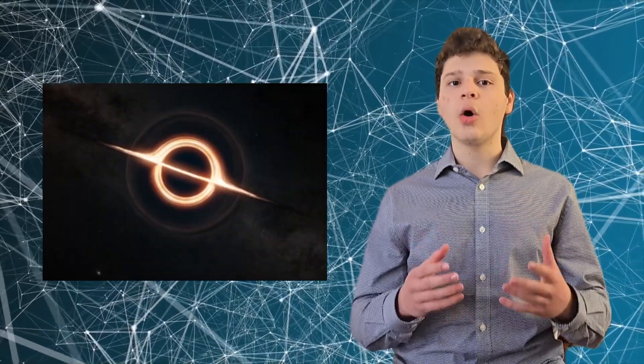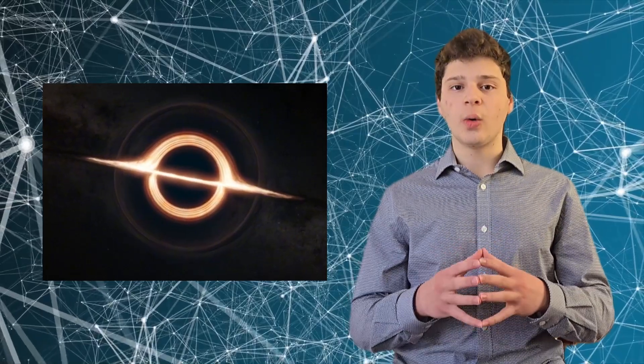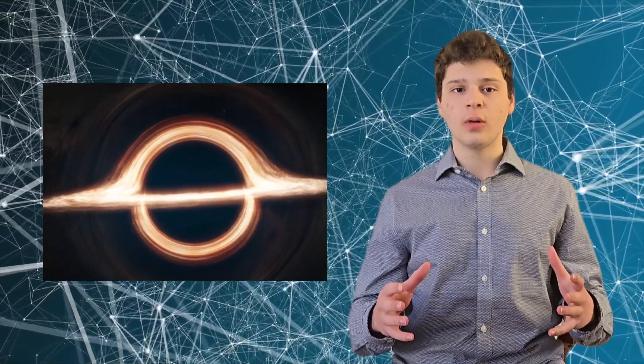So what makes a black hole active? It all depends on how much material is being pulled in. Surrounding the black hole is a glowing disk of gas and dust called an accretion disk. The brighter this disk, the more active the black hole.